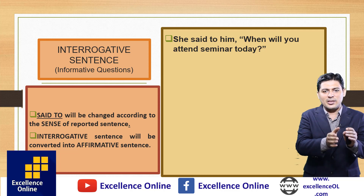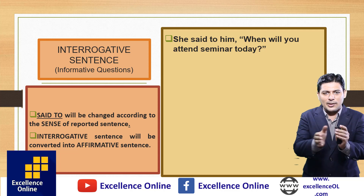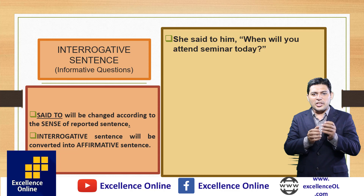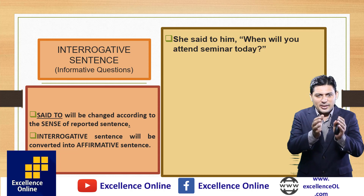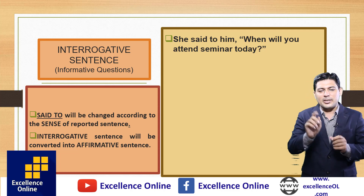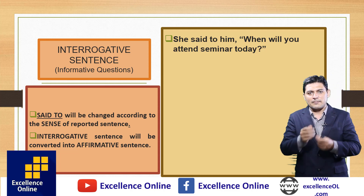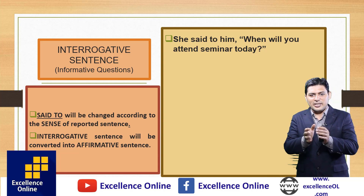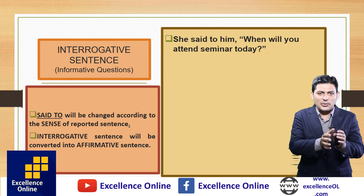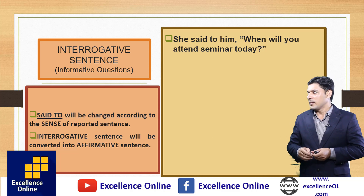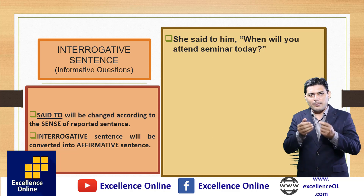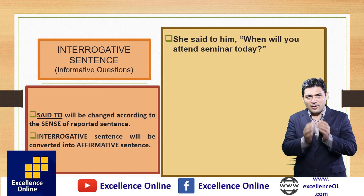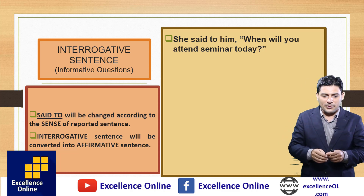For informative questions, we do not use 'if' or 'whether' to join two clauses. 'She said to him' becomes 'she asked him,' 'she inquired of him,' 'she interrogated him,' or 'she questioned him.' We will not use 'that,' and we will not use 'if' or 'whether.' All WH words — when, where, how, what, and others — remain the same.